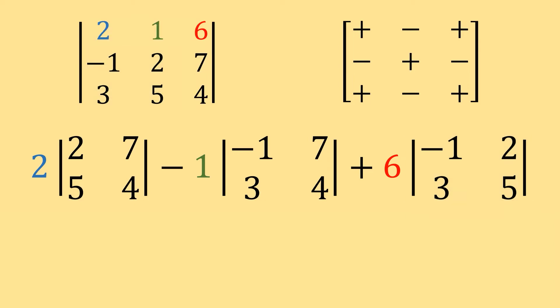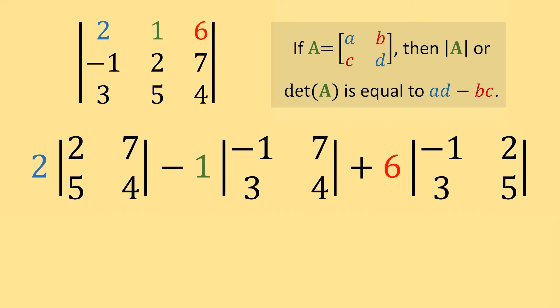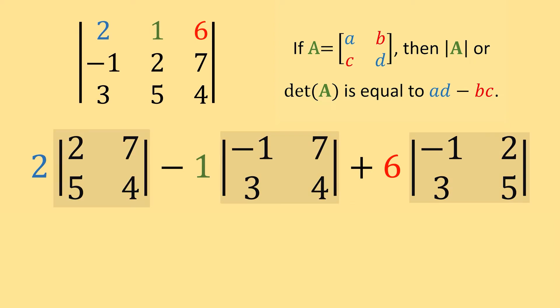Notice I'm able to reduce the size of my determinant through all these steps. I had the determinant of a 3x3 initially, and now I have numbers multiplied by the determinants of 2x2 matrices. And if you recall, we can calculate the determinant of a 2x2 matrix pretty easily. If we use this guide matrix A with values A, B, C, and D, the determinant of A is equal to A times D minus B times C. We can use this to help calculate all these 2x2 determinants. If you need a refresher on that, check out this video here.